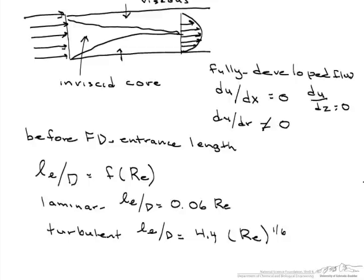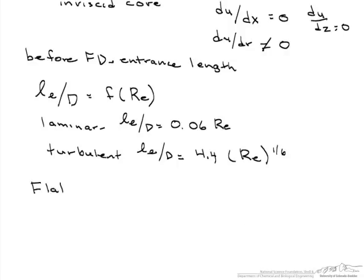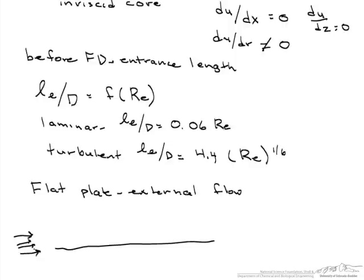So there we are looking at a pipe. Let's say instead we look at a flat plate. This is what we would consider external flow. Again for a flat plate, the purpose of the boundary layer is to allow the fluid to change its velocity from its upstream value, which is this uniform velocity profile, and we will call this u, to 0 at the surface.